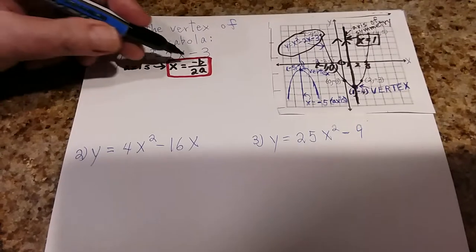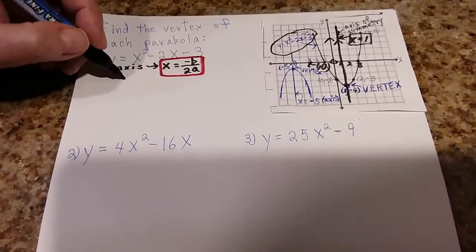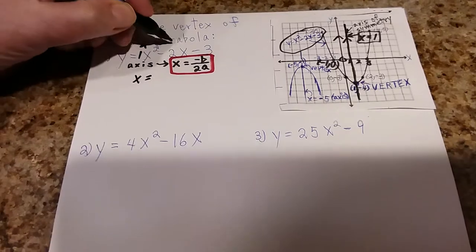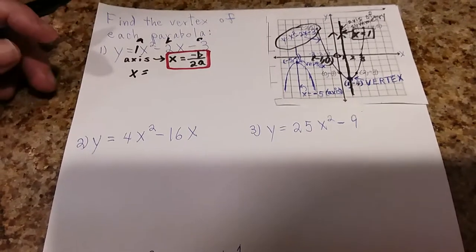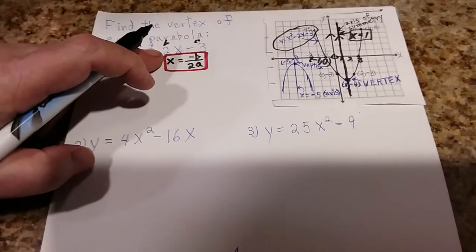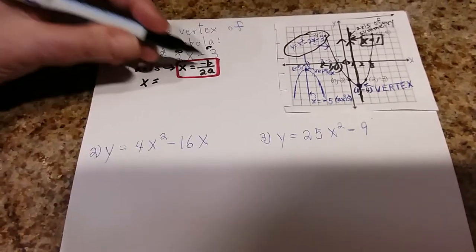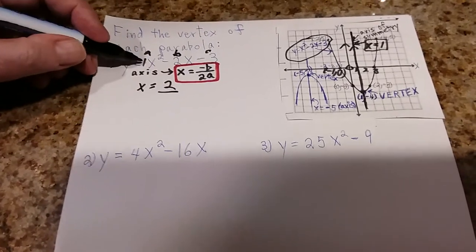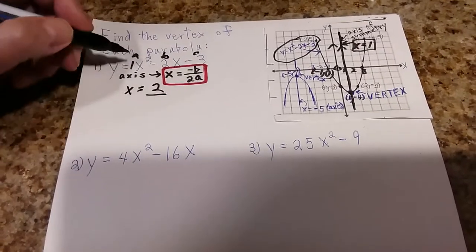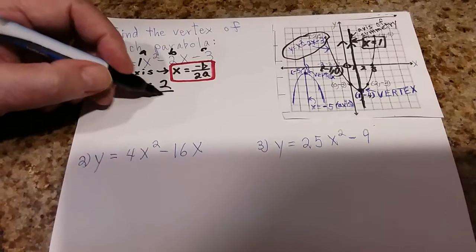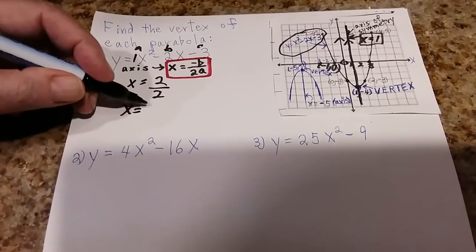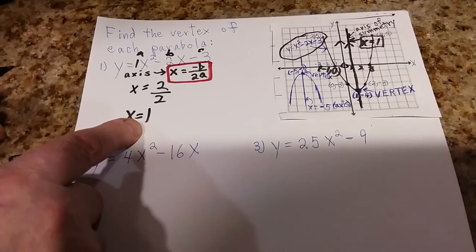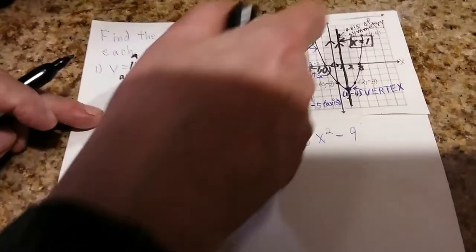That's the type of question you'll be answering: find the vertex of each parabola, then they give you the equation. You start off with the axis of symmetry — write the formula and substitute. Remember: a is 1, b is -2, and c is -3. So -b is positive 2, the bottom is 2 times a, or 2 times 1, which is 2. And 2 divided by 2 is 1.